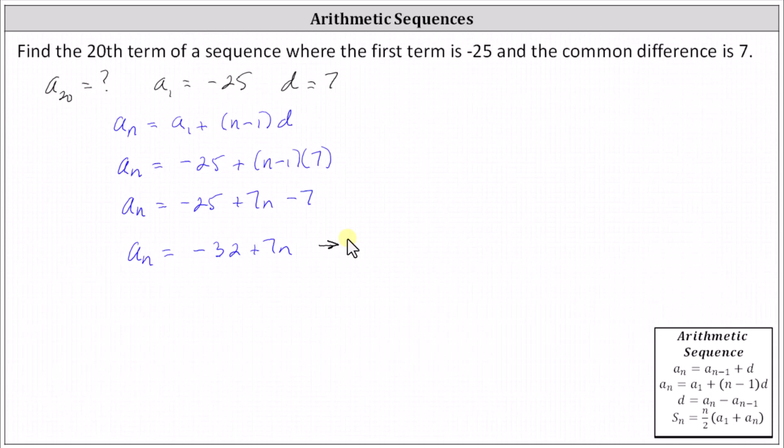When determining a sub 20, notice n equals 20. So a sub 20 equals negative 32 plus 7 times 20, which gives us a sub 20 equals negative 32 plus 140.